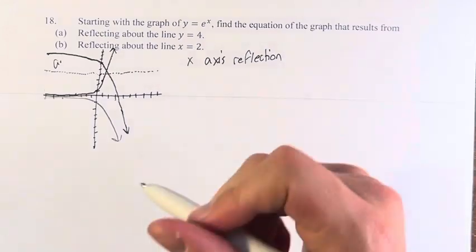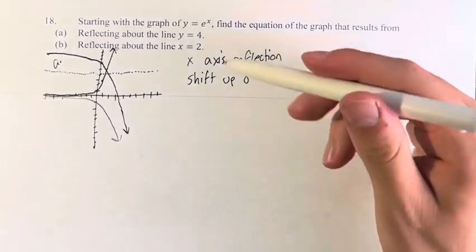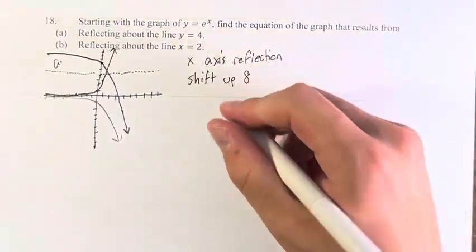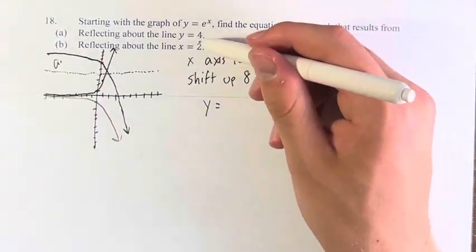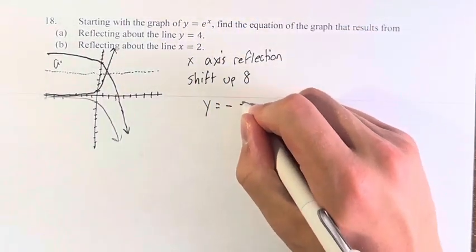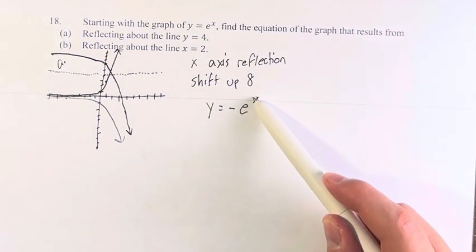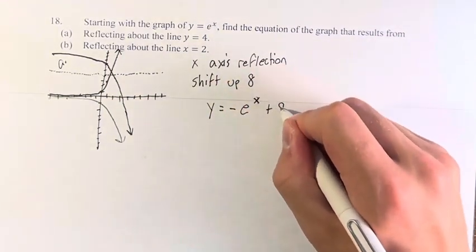So to actually reflect it, we have to shift up 8 units. Then we just add these two together using the transformations that we know. So this is y equals, for the x-axis reflection, it becomes negative e to the x. Right? If it was y-axis reflection, it would be e to the negative x. But it's negative e to the x. And then up 8 units, we have to add 8 at the end.